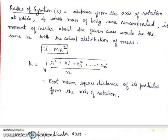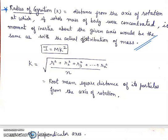Next is radius of gyration, denoted by K. Radius of gyration is the distance from the axis of rotation at which, if the whole mass of the body were concentrated, its moment of inertia about the given axis would be the same as with the actual distribution of mass. I equals M·K². K can be written as the square root of (R1² plus R2² plus R3² up to Rn²) upon N. So radius of gyration is the root mean square distance of the particles from the axis of rotation.